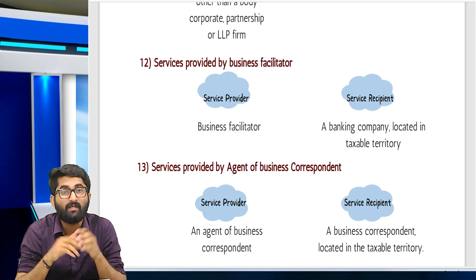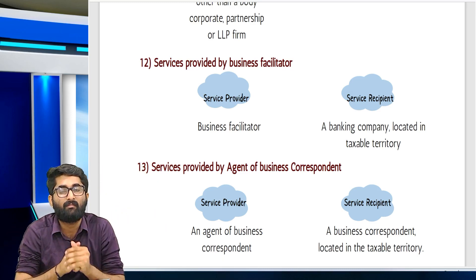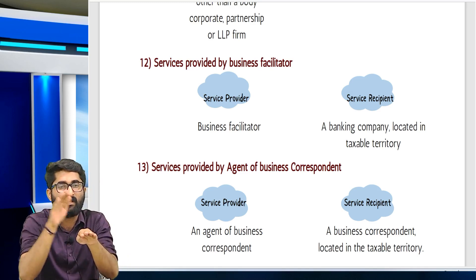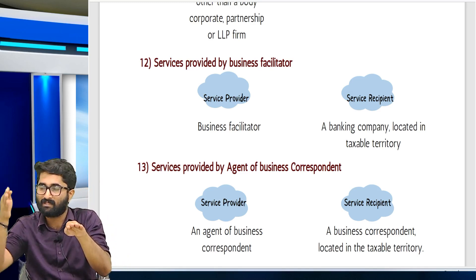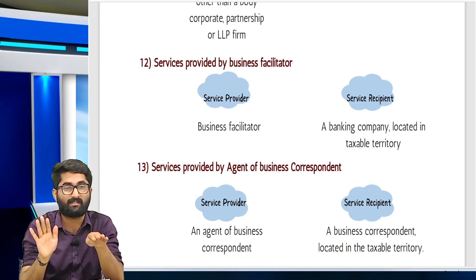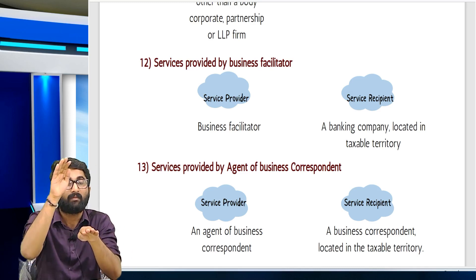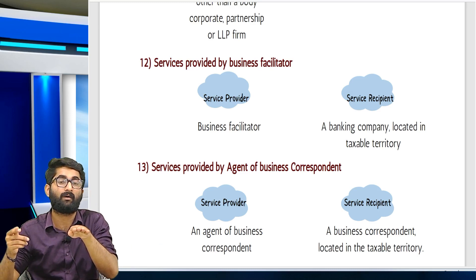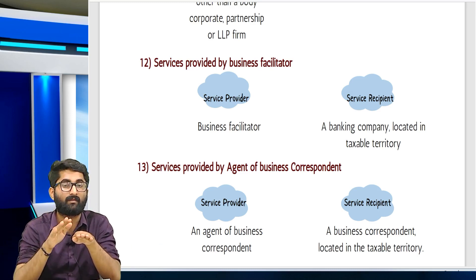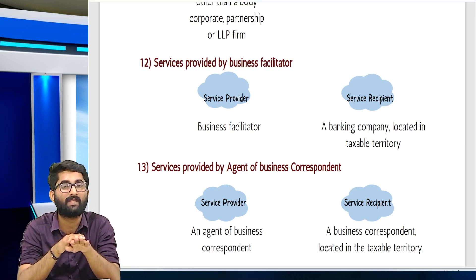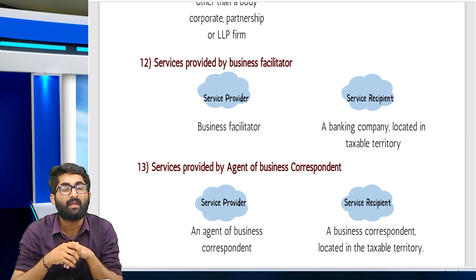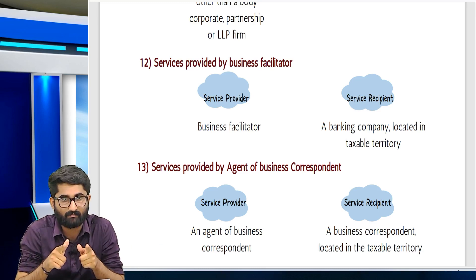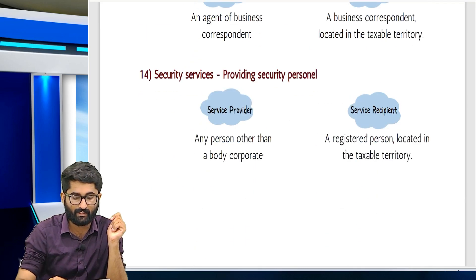Agent of business correspondent giving services to the business correspondent — business correspondent pays under RCM. Business correspondent giving services to the bank — bank pays under FCM. So: business facilitator and bank → bank pays under RCM; agent of business facilitator and business facilitator → business facilitator pays under FCM.